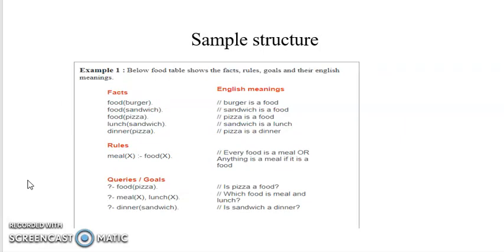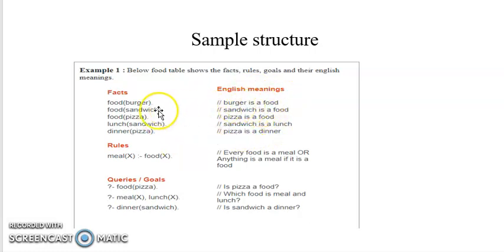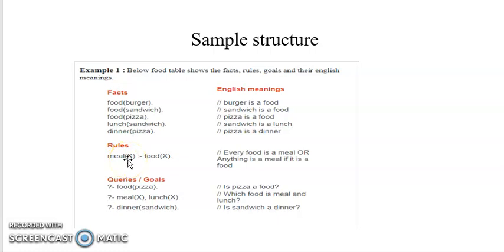You can see the structure here — these are the facts and these are their meanings. For example, 'food(burger)' means that burger is a food. We also have an additional rule which says: something 'is_meal' if it is food — that is its English semantic meaning: if it is food, it is a meal.